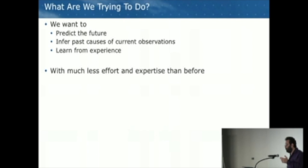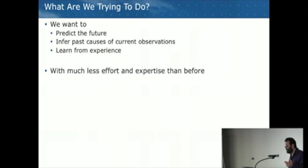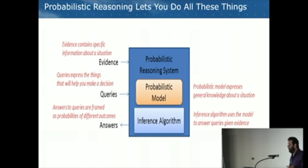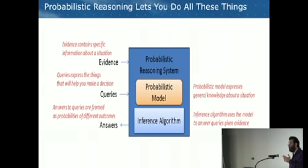What we're trying to do with probabilistic programming is we want to be able to predict future events given some situation that we're in. We want to infer past causes of current observations, and in general, we want to be able to learn from experience to make better predictions — with much less effort and expertise required than previously. This is probabilistic reasoning in a nutshell. You have a probabilistic model containing general knowledge about a situation, evidence which is specific knowledge, and queries — things you want to infer. The inference algorithm lets you answer these queries using the rules of probability.